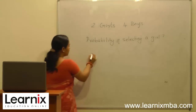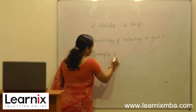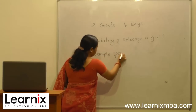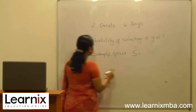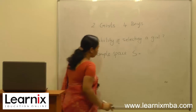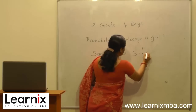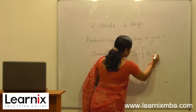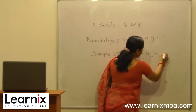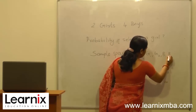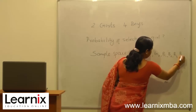In this case, the sample space S is defined as follows. Since there are two girls and four boys, we can write the sample space S as G1, G2, B1, B2, B3, B4.